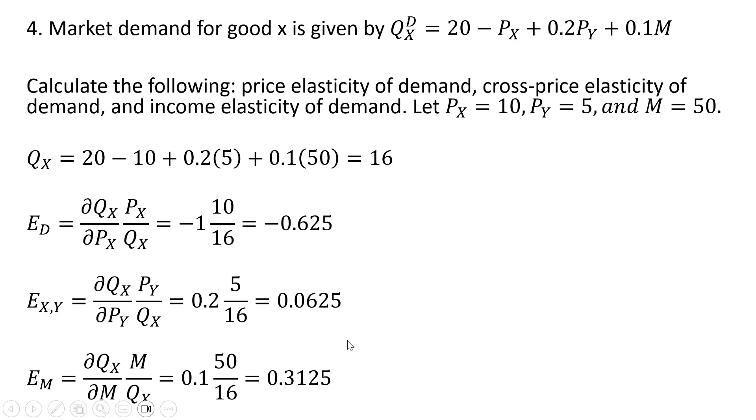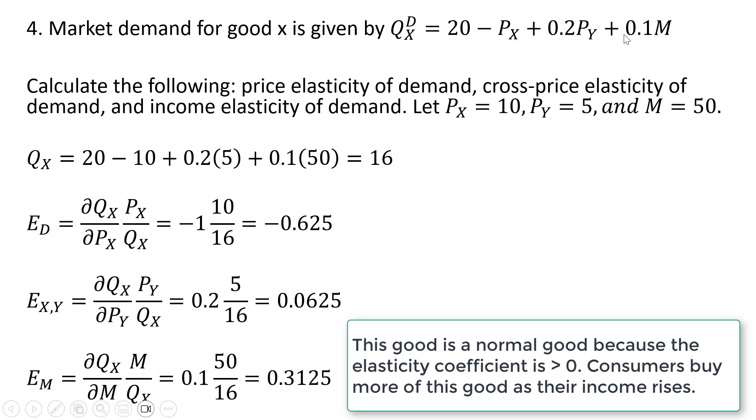And finally, to get the income elasticity of demand, take another partial derivative, but this time with respect to income. We get back the coefficient on the income term here of 0.1, multiply that by the value of income, 50, and divide it through by the quantity of 16, and that is our income elasticity of demand.